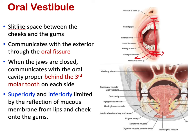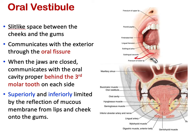More importantly, the oral vestibule can communicate with the oral cavity through a gap located behind the third molar teeth — the last tooth, either upper or lower. Behind them there is a gap by which the oral vestibule communicates with the oral cavity.